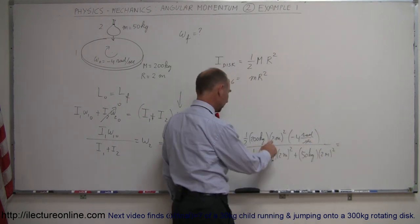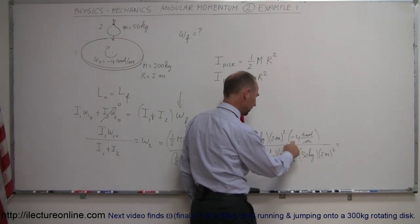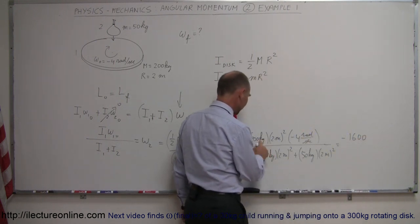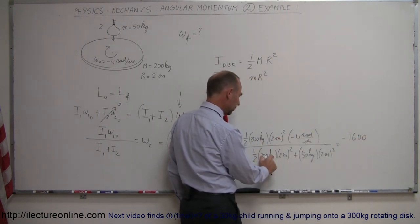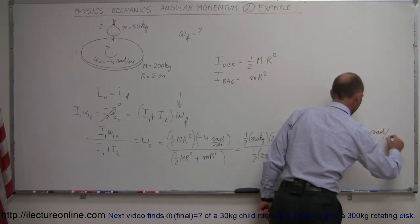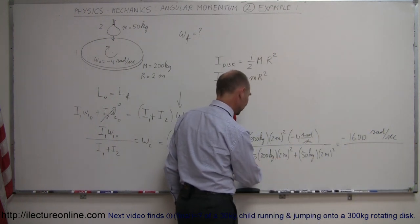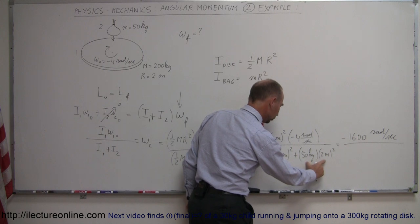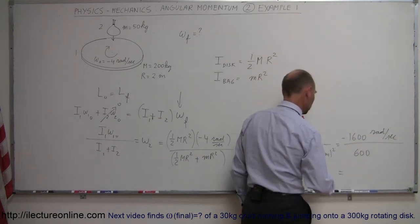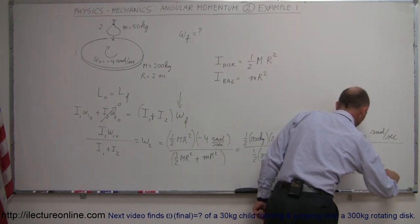And now we're going to add the two moment of inertia. So we have one-half the mass, 200 kilograms times 2 meters squared, plus 50 kilograms for the bag, times 2 meters squared. Now working this out, we have, that's 4, that's 2, that's 400, times minus 4, that's minus 1600. Notice that we have kilograms meters squared in the numerator and kilograms meters squared in the denominator, so that cancels out. We're left with radians per second, divided by, in the denominator, that's 4, that's 8, that's 400, plus another 200, that's 600. And so that is equal to minus 2.67 radians per second.